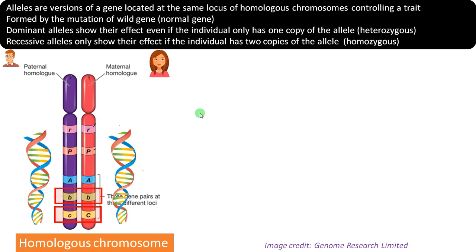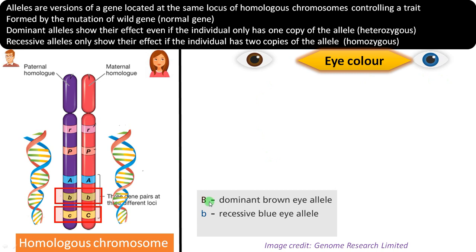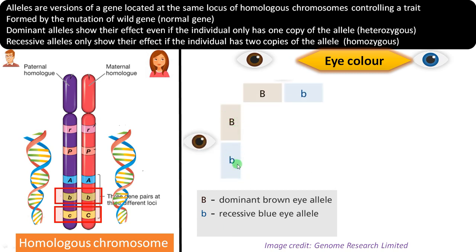Now let us take an example to understand what is a dominant allele and a recessive allele. Let's take eye color in humans. Brown eye is considered a dominant allele-controlled character, whereas blue eyes are considered recessive. Brown eye, given as capital B, is the dominant allele, while small b is the recessive blue eye allele. Let's make a Punnett square — crossing capital B capital B with capital B small b in heterozygous condition.